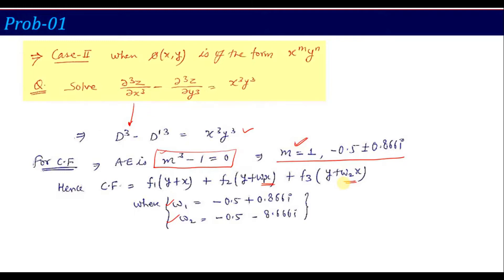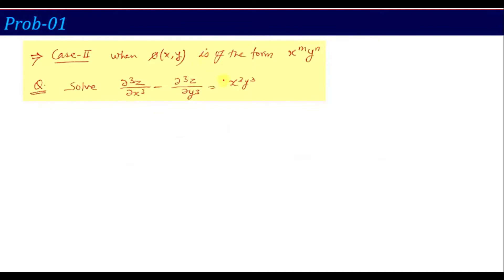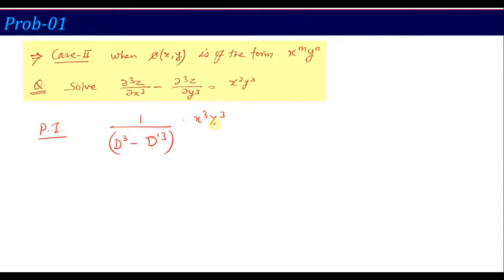Now the main important thing is the PI calculation. For PI, the right hand side is x³y³. PI is written as 1 over (D³ minus D'³) into x³y³. Since this is an x and y term, we perform an expansion here. To do the expansion, we first take D³ common from the denominator.